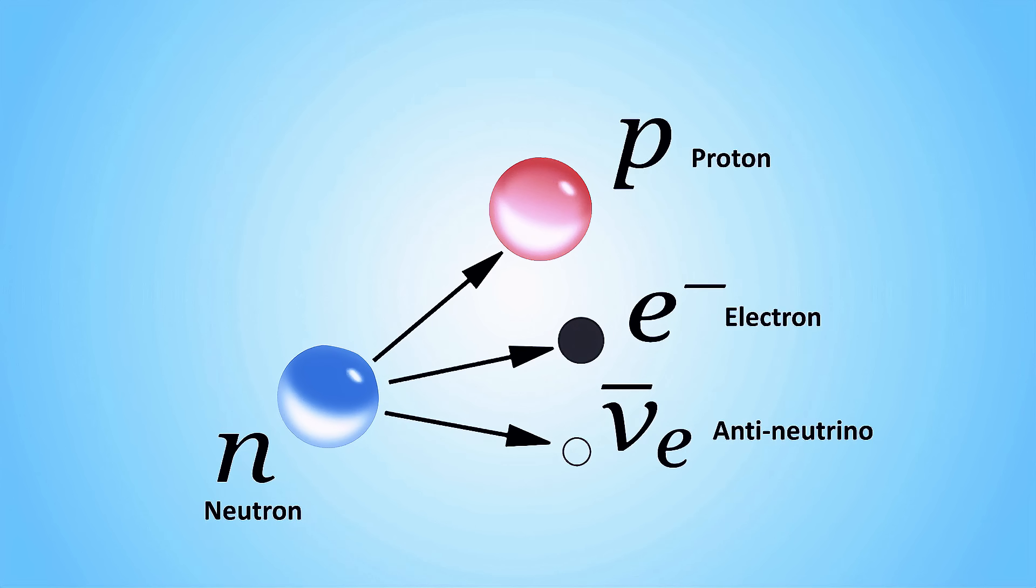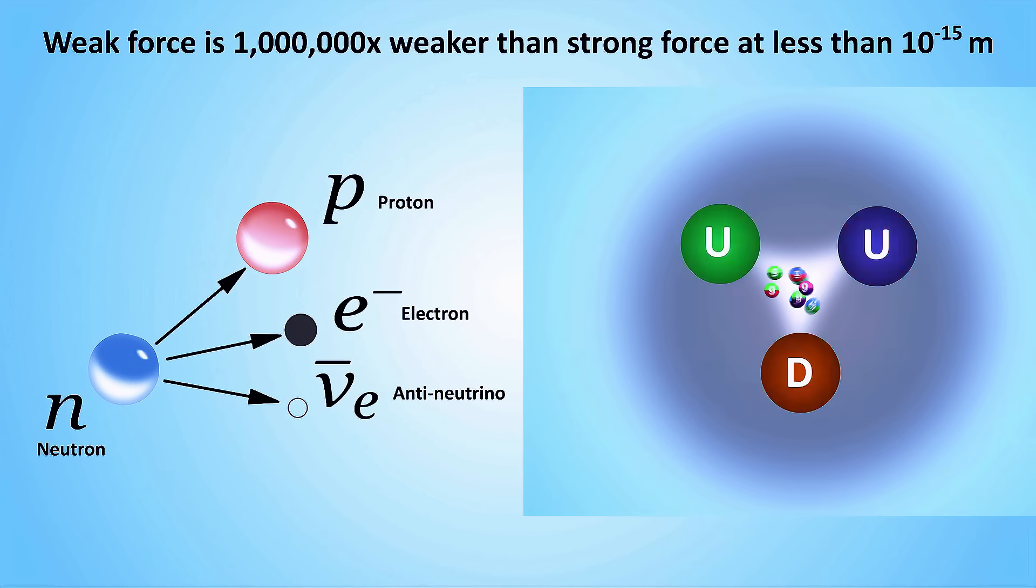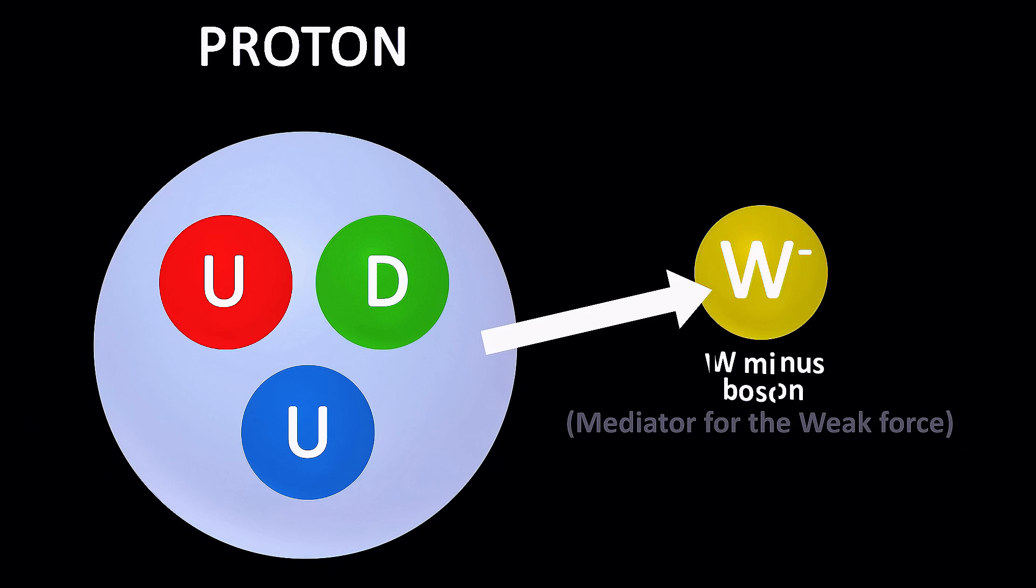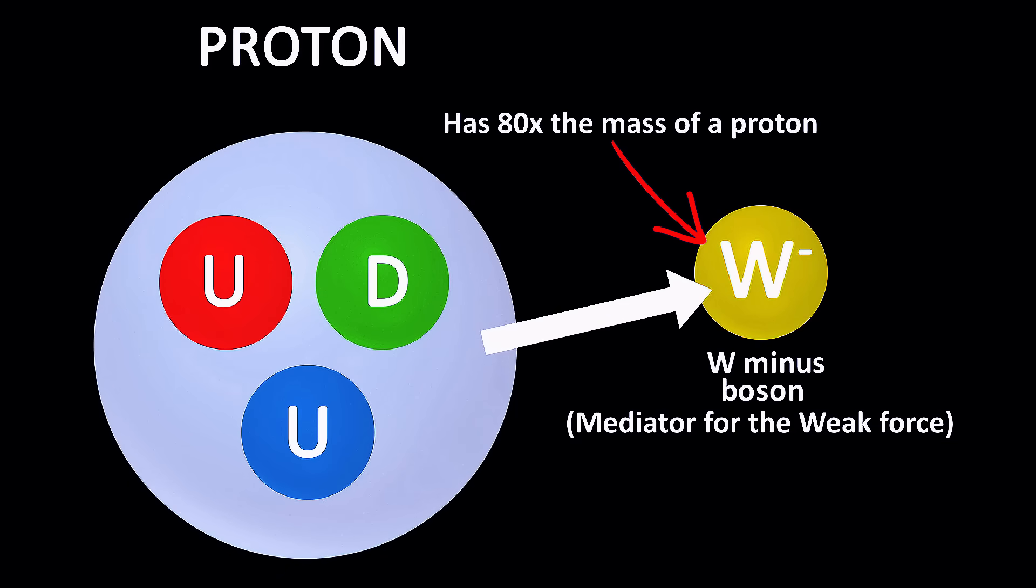The name is very fitting because it's a million times weaker than the strong force, at femtometer scales. The weak force operates at incredibly short ranges, only about 0.1% of the diameter of a proton. This is due to its mediators, the W and Z bosons. Unlike photons and gluons, these particles are massive, about 80 times the mass of a proton.